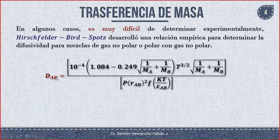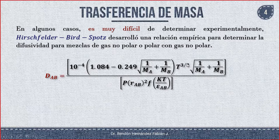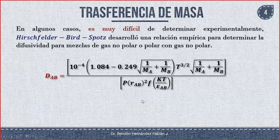La ecuación dice que la difusión de A hasta B es igual a 10⁻⁴ multiplicado por 1.084 menos 0.249 multiplicado por la raíz de (1/M_A + 1/M_B), multiplicado por la temperatura a las 3/2, multiplicado por la raíz de (1/M_A + 1/M_B), todo dividido entre la presión por R_AB al cuadrado por la función Ω de KT/ε_AB.